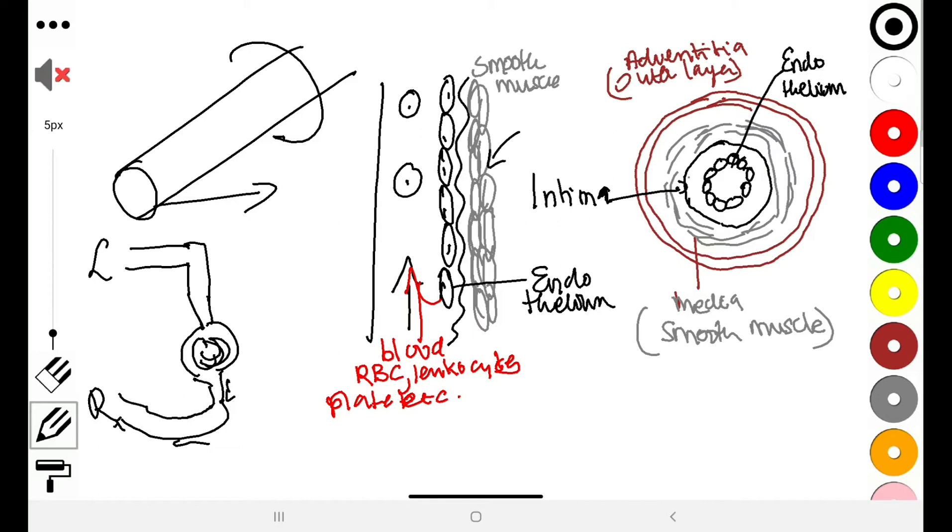Contraction is due to what we have learned, which is the myosin light chain mechanism. We can appreciate that for arteries and arterioles, you're talking about changes from the aorta 2.5 to 0.4 centimeters to about 30 micrometers.